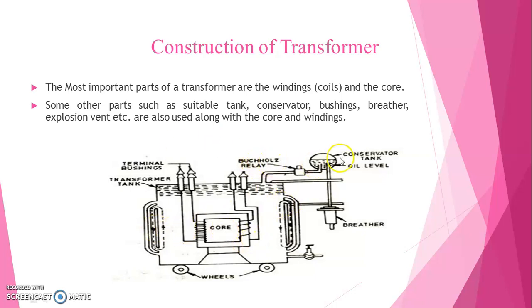Buchholz relay, conservator tank, oil level, breather, and thermal bushings all are indicated in this diagram. See, the transformer core along with the windings are immersed inside the transformer tank. The transformer tank is already filled with the transformer oil. The transformer oil is nothing but bitumen oil or mineral oil.